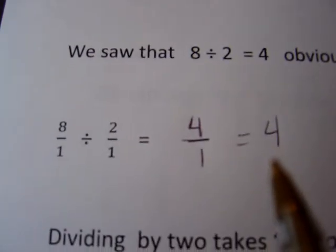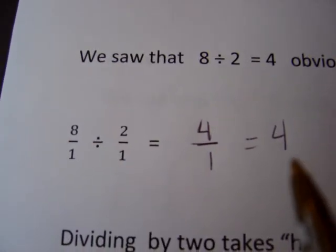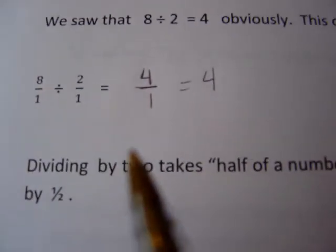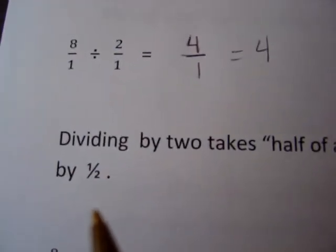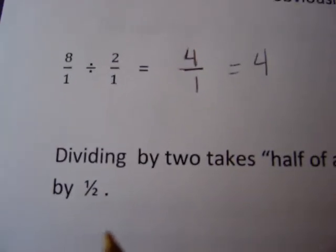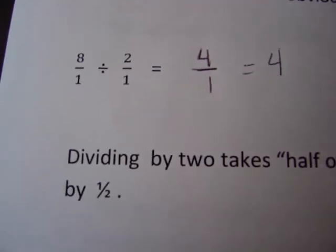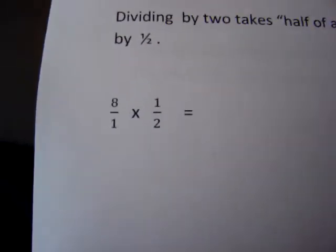We had 8, we divided by 2, and we ended up with 4. Dividing by 2 takes half of the number because you're splitting it effectively into two pieces. Now if dividing by 2 takes half of a number, so does multiplying by 1 half. If you take half of 8, that leaves you with 4 also.